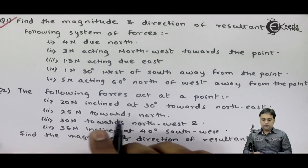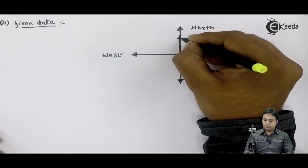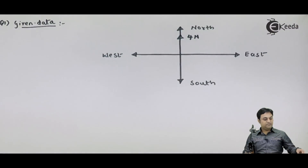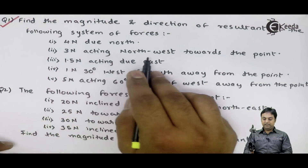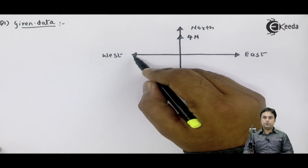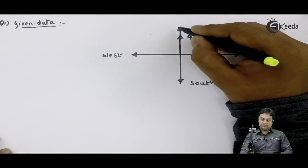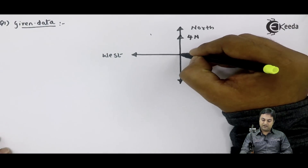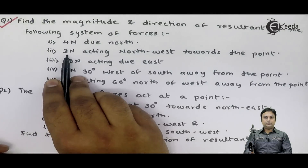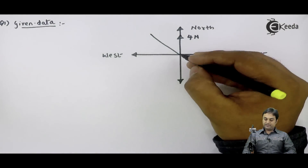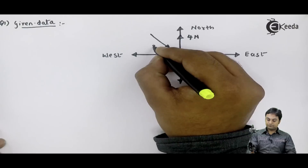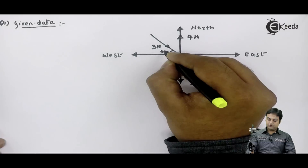The first force is 4 Newton due north, so it acts in the north direction. The second is 3 Newton acting north-west towards the point. North-west means the angle between north and west is 90 degrees, so we take exactly half — 45 degrees. The force of 3 Newton acts at 45 degrees inclination with both horizontal and vertical, directed towards the origin.